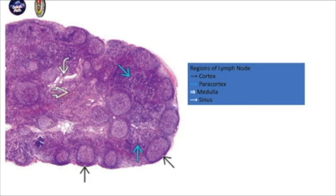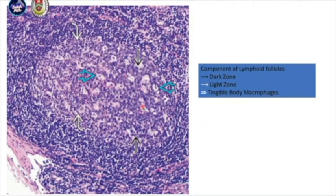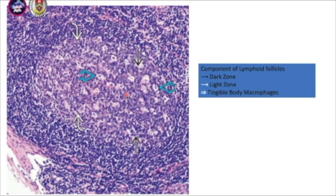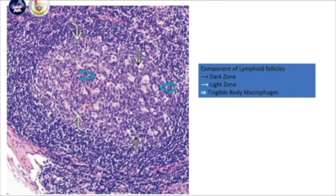This is how a low magnification of a benign lymph node looks like. If you look at the higher magnification, you can see the lymphoid follicles. In benign lymphoid follicles, you have a dark zone and lighter zone. In the dark zone, you have centroblasts, and in the lighter zone, you have tingible body macrophages and some mature B lymphocytes and T helper lymphocytes within the lymphoid follicle.